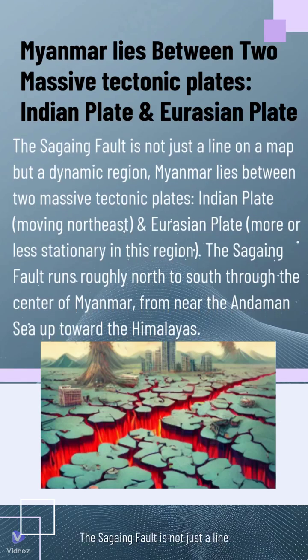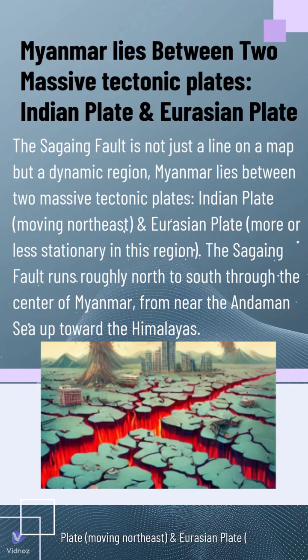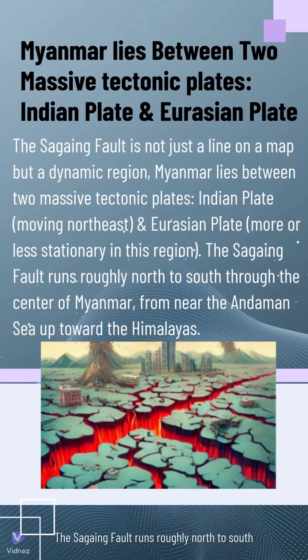The Sagaing Fault is not just a line on a map but a dynamic region. Myanmar lies between two massive tectonic plates: the Indian Plate, moving northeast, and the Eurasian Plate, which is more or less stationary in this region. The Sagaing Fault runs roughly north to south through the center of Myanmar, from near the Andaman Sea up toward the Himalayas.